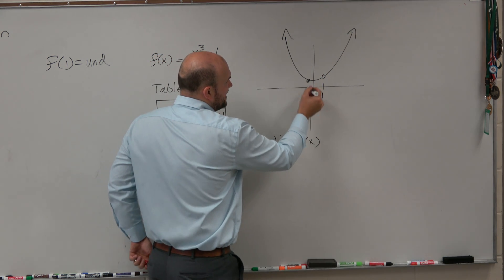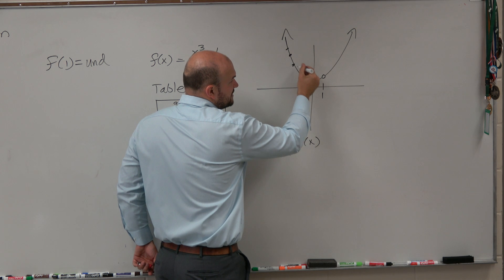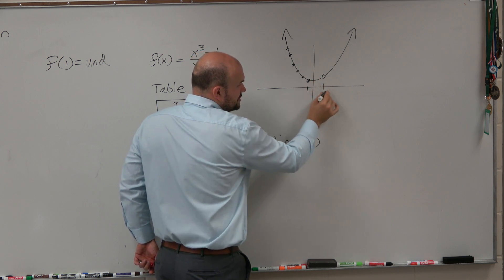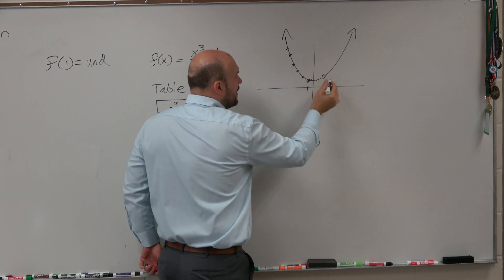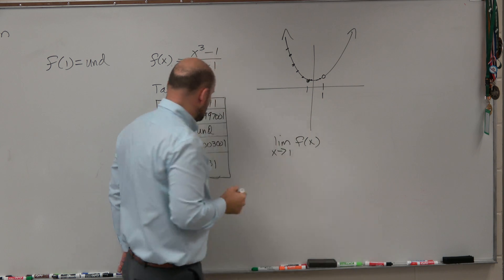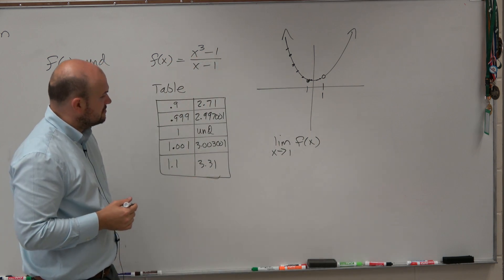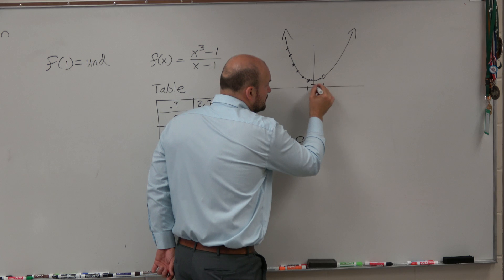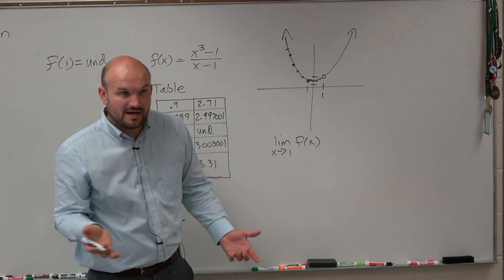As we choose x values from the left, getting closer and closer to 1, what y value are we getting really close to? What is that y value? It was 3, right?